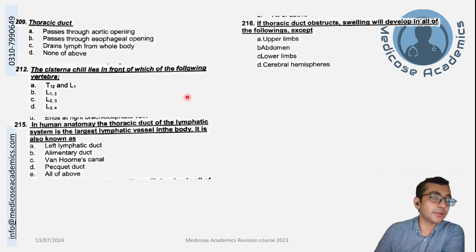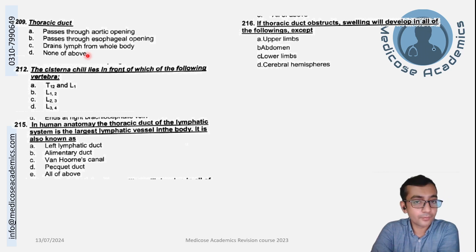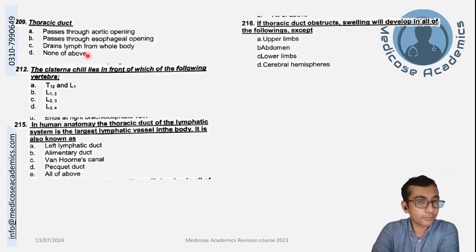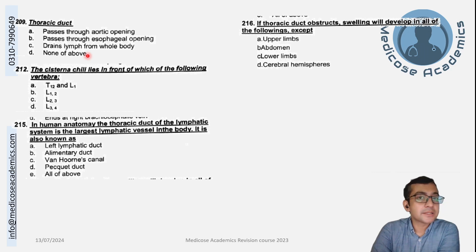Now a true or false question: does the thoracic duct pass through the esophageal opening or the aortic opening, and does it drain lymph from the whole body? The correct answer is that it passes through the aortic opening — option A.